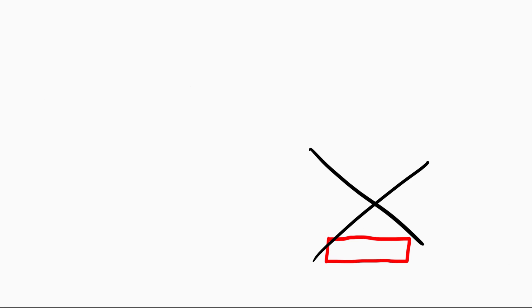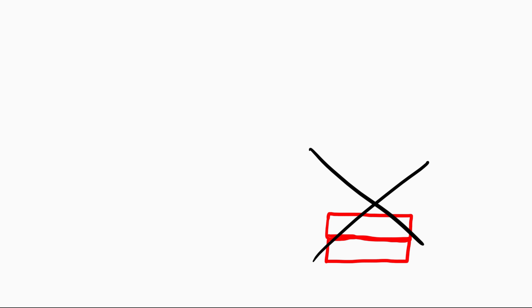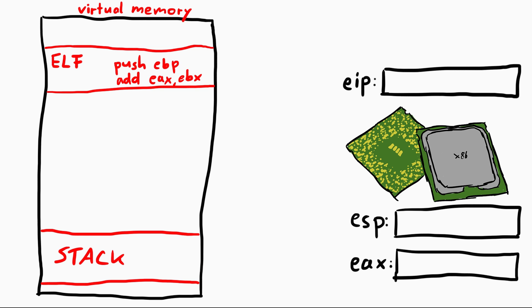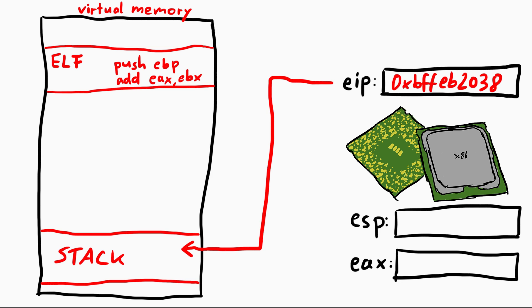Lose the mental image of a stack that grows and shrinks that you learned in computer science, and just think of what it really is: memory where the ESP register points to, and instructions cause interesting effects based on that register. In the same sense, the instruction pointer EIP is not special either. Usually it points into your code, but it doesn't have to. If you manage to control EIP somehow, you can just point it into other memory — for example the stack, which we have used in previous exploits.